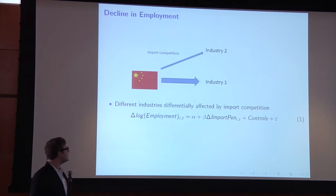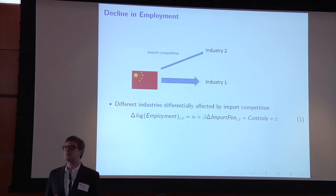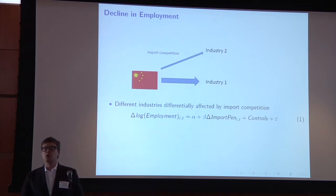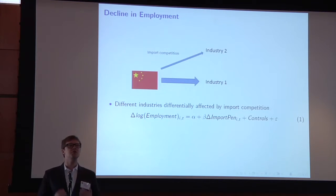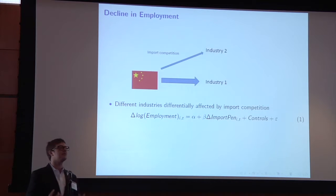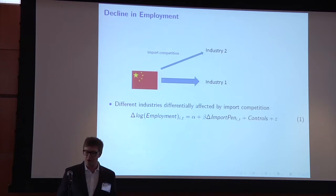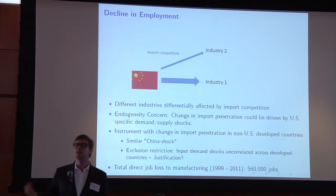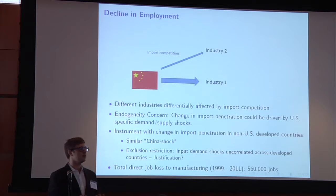To summarize the paper in pictures: the baseline specification is the idea that different manufacturing industries are differentially affected by import competition from China. Going back to the 1990s and comparing an industry that saw a lot of subsequent imports from China versus one that didn't gives you a sense of the impact. The problem with a basic OLS regression is an endogeneity concern — the change in import competition between 1990 and today might well not be driven by something happening in China, but by problems in that US manufacturing sector itself.